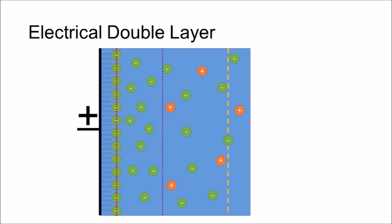The double layer consists of two layers. The Helmholtz layer is made up of a dense layer of ions separated from an oppositely charged electrode by a layer of solvent molecules.